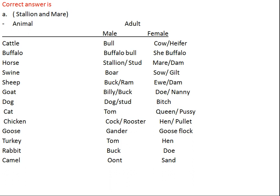For horse, adult male is stallion or stud, and female is mare or dam. For swine, adult male is boar and female is sow or gilt. Sheep: adult male is buck or ram, female is ewe or dam. Goat: male is billy or buck, female is doe or nanny. Dog: male is dog or stud, female is bitch. Cat: male is tom, female is queen or pussy. Chicken: male is cock or rooster, female is hen or pullet. Goose: male is gander, female is goose. Turkey: male is tom, female is hen. Rabbit: male is buck, female is doe. Camel: male is unt, female is sand.